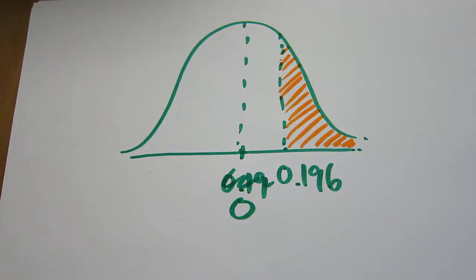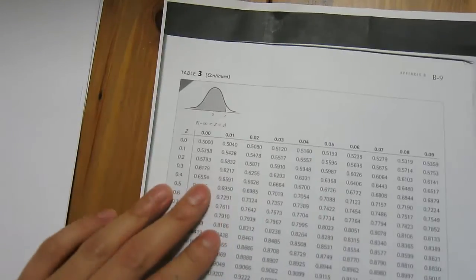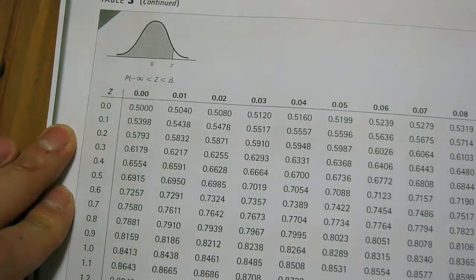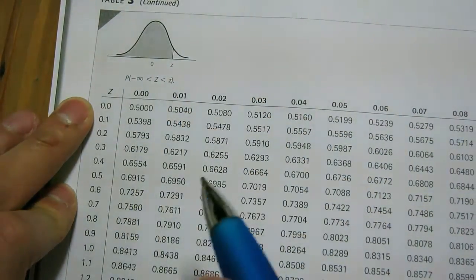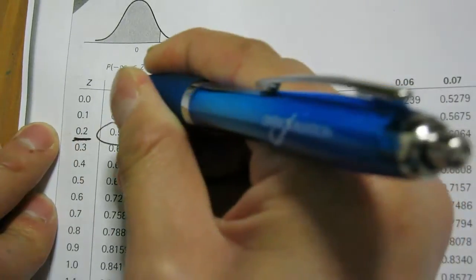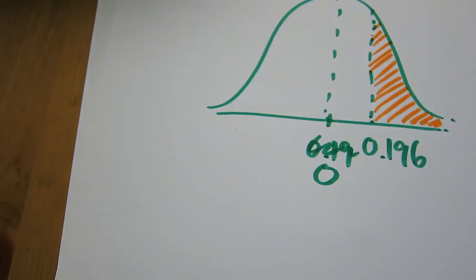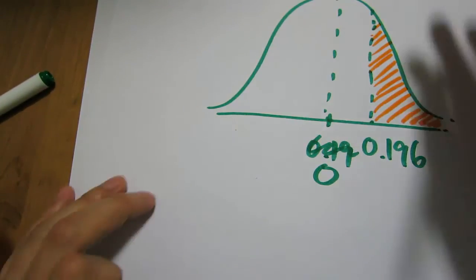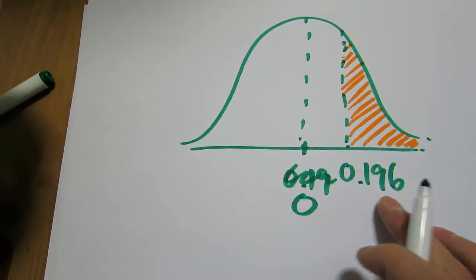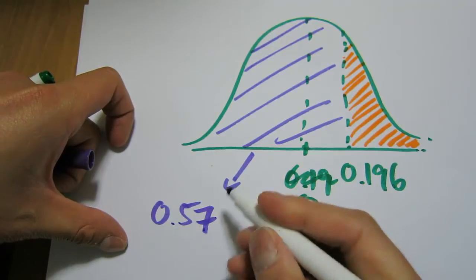So we need to find this shaded region. We know the Z-score cuts off at 0.196. We look this up in the cumulative standard normal distribution table — the table is rounded to two decimal places, so 0.196 is rounded to 0.2. Looking up 0.2 gives us the area to the left of that value.